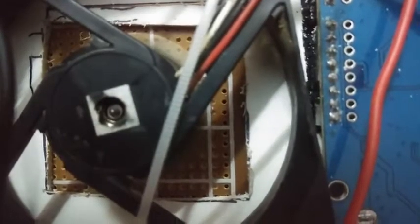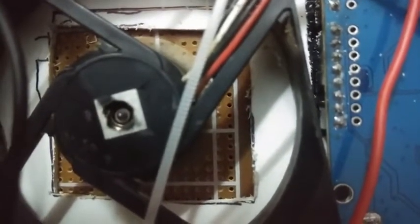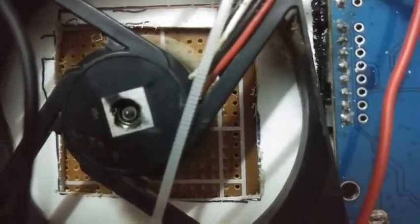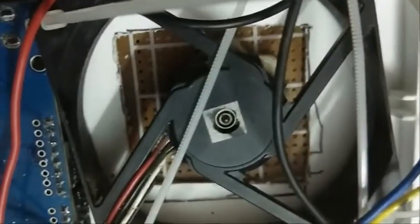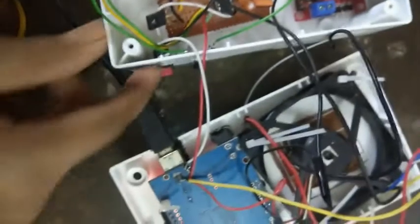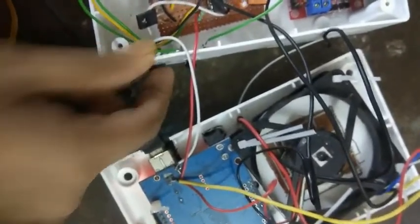The problem with the computer fan is that you cannot actually control the speed very well like in a DC motor. In a DC motor you can control the RPM very precisely, but because the computer fan is a brushless DC micro motor, using a PWM signal to control the speed becomes very tough. Here, when there is a low t-on and high t-off ratio of the PWM signal, the computer fan just vibrates.